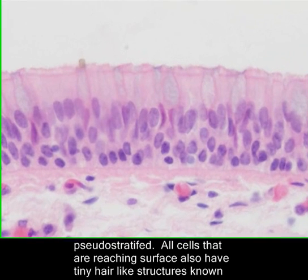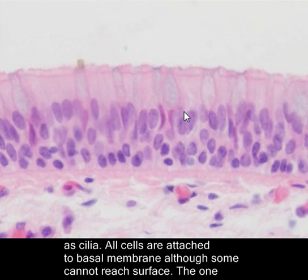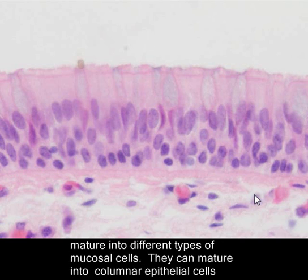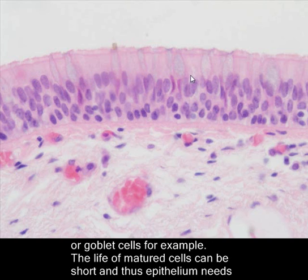All cells reaching the surface have tiny hair-like structures known as cilia. All these cells are attached to the basal membrane, although some cannot reach the surface. The ones that cannot reach the surface are known as basal cells, which are stem cells that eventually mature into different types of mucosal cells — such as columnar epithelial cells or goblet cells.